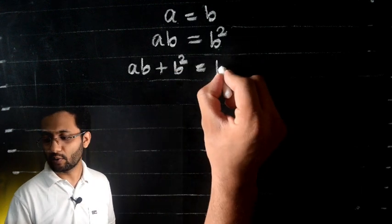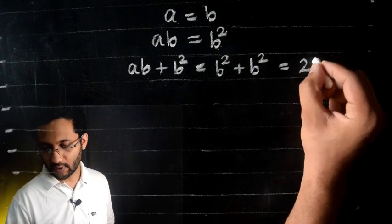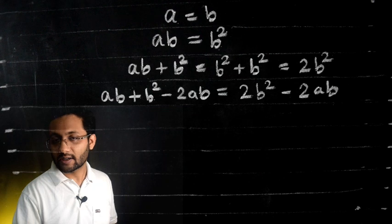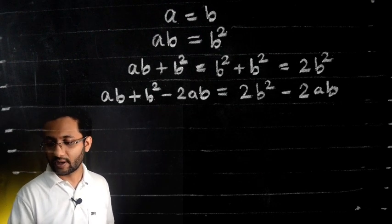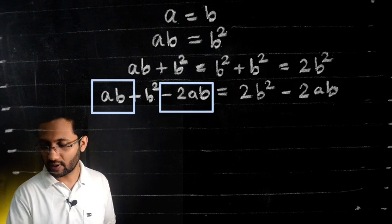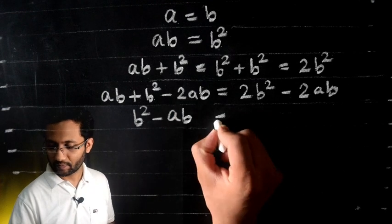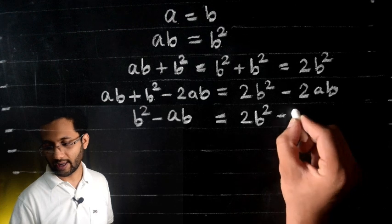Third step, we subtract 2ab from both sides. And here we have ab - 2ab, that is -ab. So we write left side as b² - ab, that's equal to 2b² - 2ab.